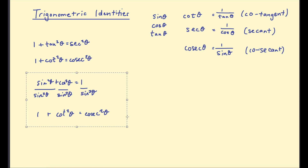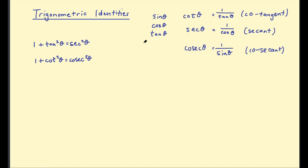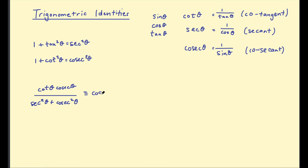You need to be aware of those identities and be able to use them in different proofs. Let's look at this first example: cot θ · cosec θ divided by (sec²θ + cosec²θ) is equivalent to cos³θ. This is a 'show that' question. When doing identities involving these functions, it helps to break everything down into sine and cosine and then simplify.